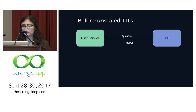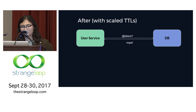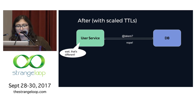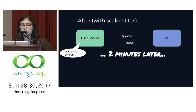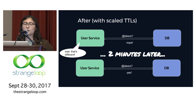Consider the Lakers case. Before scaled TTLs, a transient bad value would be cached for 12 hours. With scaled TTLs, when we receive a not-found — different from the previous value — we reset the soft TTL step to zero. Two minutes later, a read-through occurs and we notice the Lakers account exists. Two minutes after that, we check again. Once we settle on a consistent value, that's what stays in cache for longer.